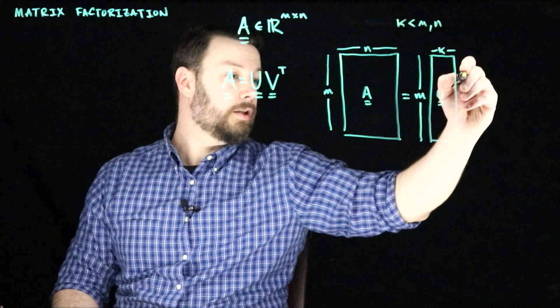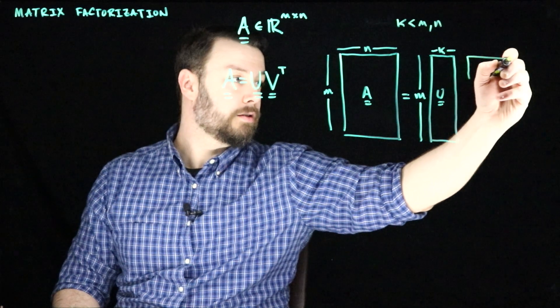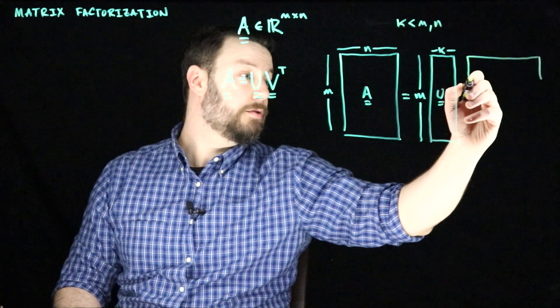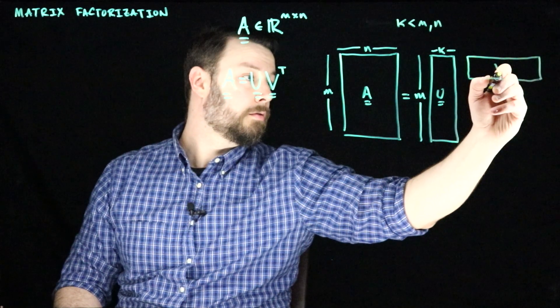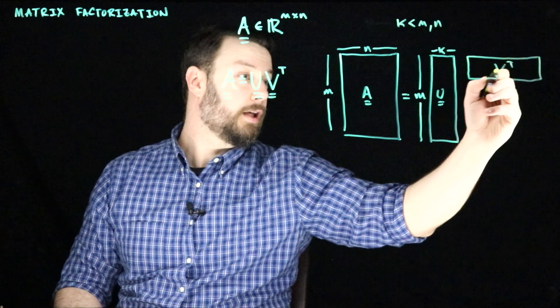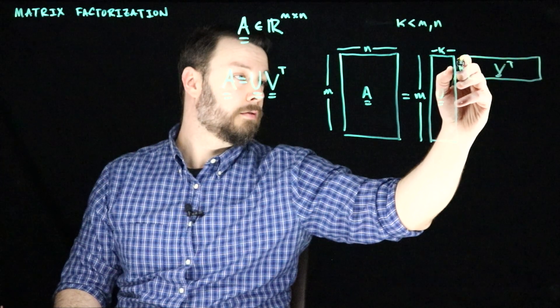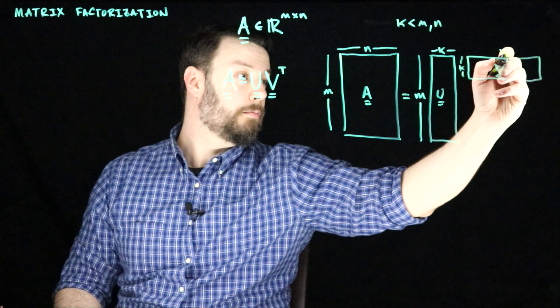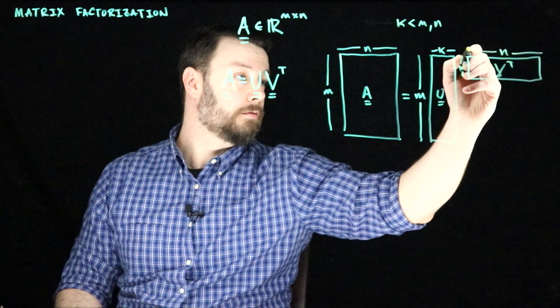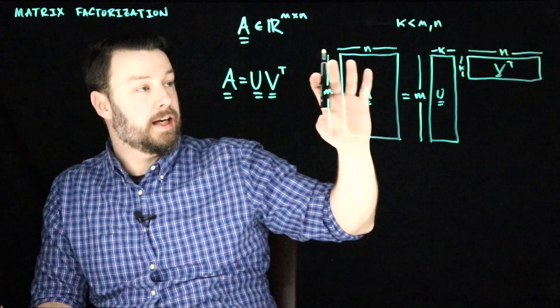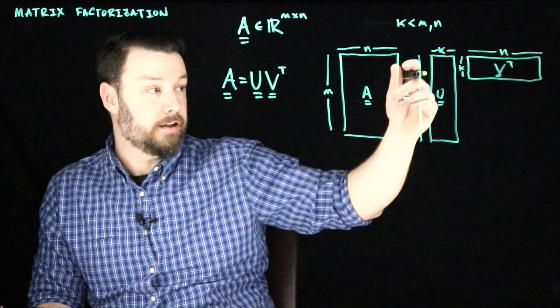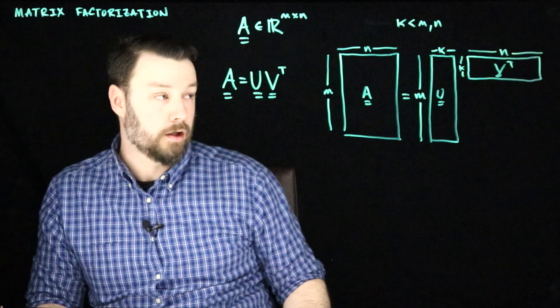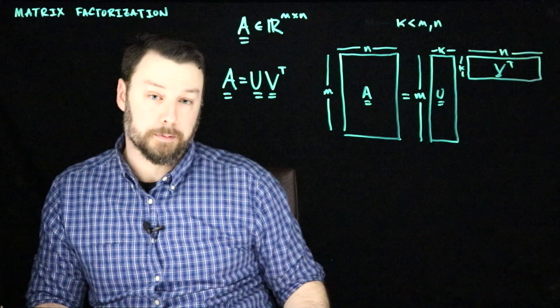And we're going to say that this is multiplied by some other matrix, V transpose. And V transpose is also K by N. So this is saying that A is low rank. That is, it's literally of rank K, assuming that these are linearly independent columns and these are linearly independent rows.